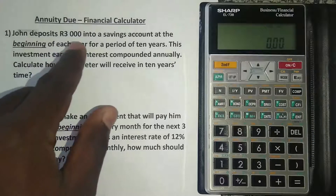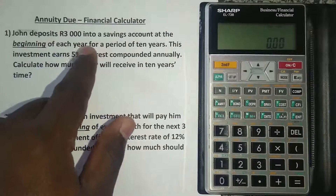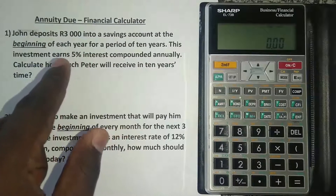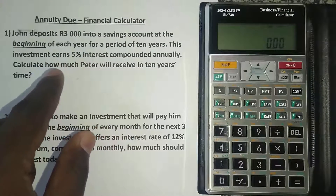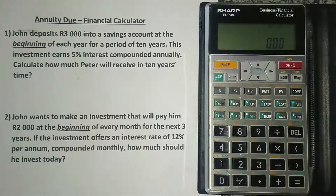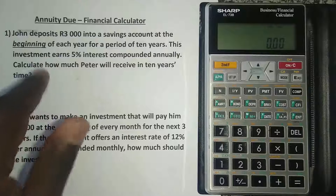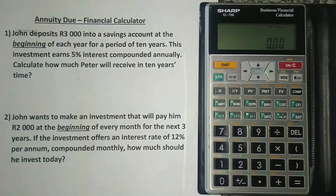Look at the first example. John deposits 3,000 Rand into a savings account at the beginning of each year for a period of 10 years. This investment earns 5% interest compounded annually. Calculate how much he will receive in 10 years' time. I've underlined the word 'beginning' — that means it's annuity due. If payments occur at the beginning of the period, it's annuity due. If it was the end of the period, then it's ordinary annuity.